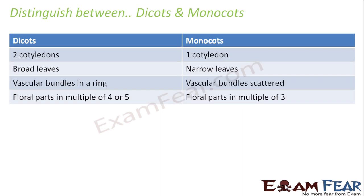Distinguish between dicots and monocots. Dicots, as the name suggests, have two cotyledons; monocots have one cotyledon. Dicots have broader leaves; monocots have narrower leaves. Vascular bundles are present in both, but in dicots they are arranged in a ring, whereas in monocots they are scattered. The floral parts in dicots are in multiples of four or five, but in monocots the floral parts are in multiples of three.